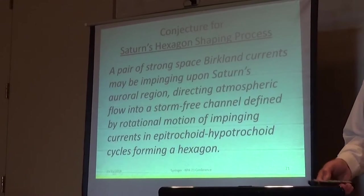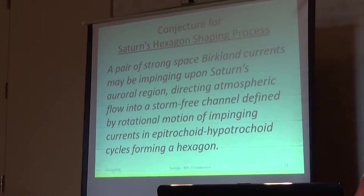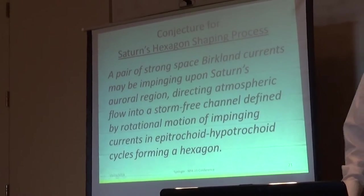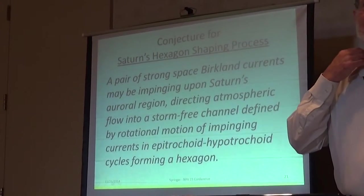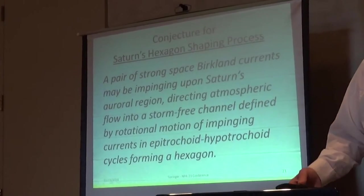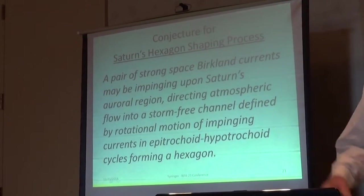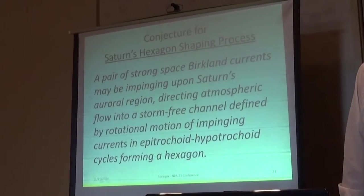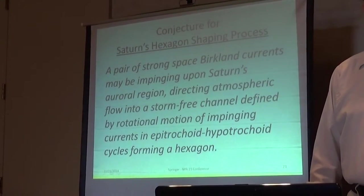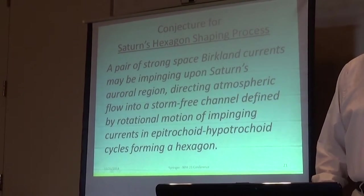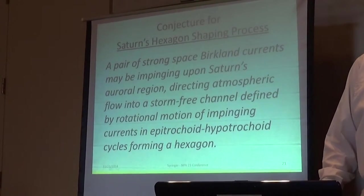The theory conjecture here is that Birkeland currents impinging on the auroral region are causing this. There's no mechanism worked out yet. If anyone wants to help him with that, find a mechanism where those auroral currents can create these vortices, that would be great, because until he gets that connection, there's no point in looking at any actual currents up there.